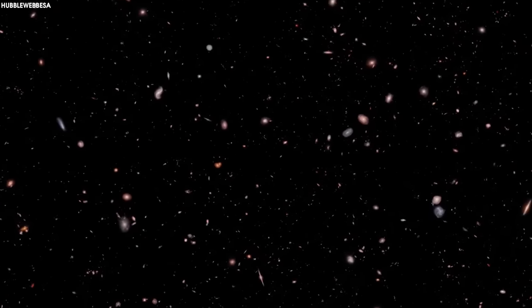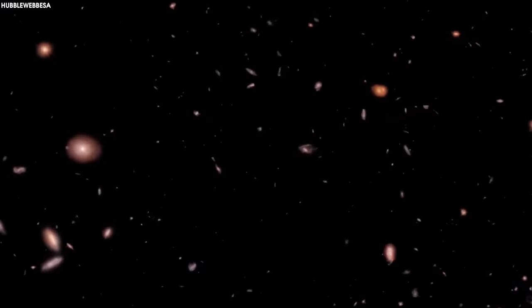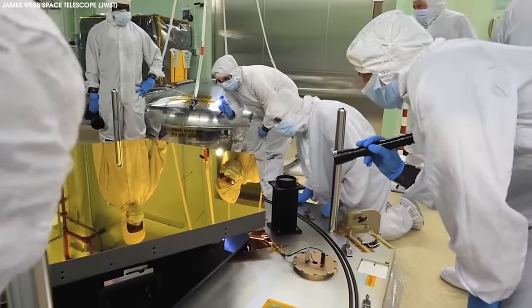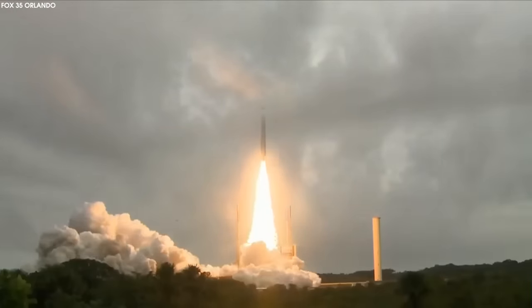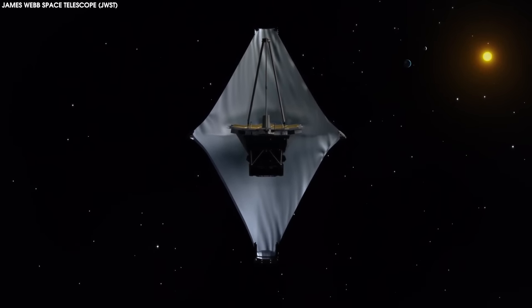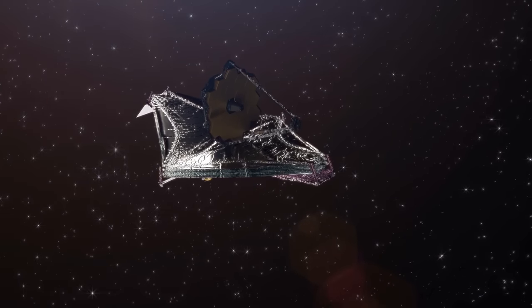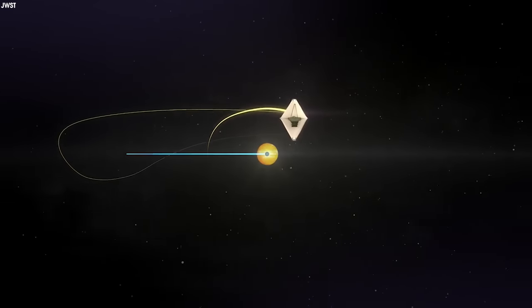This expanded sample of early galaxies will give astronomers a better idea of how galaxies looked as they first came into being. After more than two decades of labor at a cost of some $10 billion, JWST finally launched on Christmas Day of 2021. The telescope reached its deep space destination just a month later. By July of 2022, it was ready to begin its first year of science observations, known as Cycle 1.